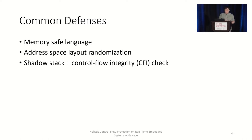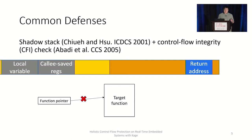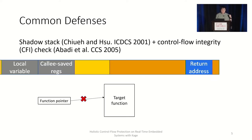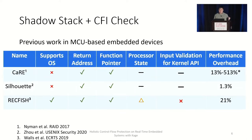Lastly, we have the shadow stack and the control flow integrity check. A shadow stack creates a second protected stack used only to store the return address. In combination with that, the defense also requires control flow integrity checks — essentially runtime checks to ensure all function pointers point to the beginning of a function rather than anywhere inside the code segment. This technique has existed in the desktop world for a long time, and there is previous work in the embedded world as well. However, most of them focus on bare-metal devices without the support of an embedded operating system, such as Kage and Silhouette.